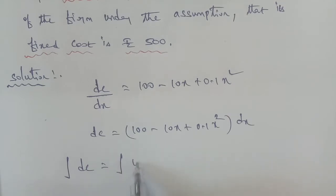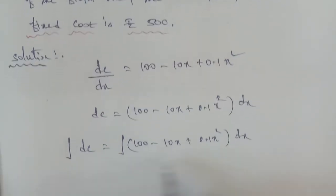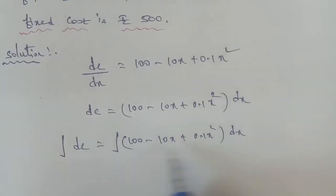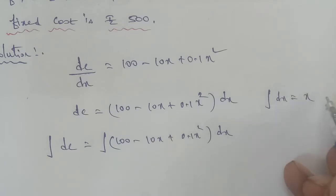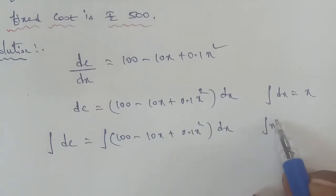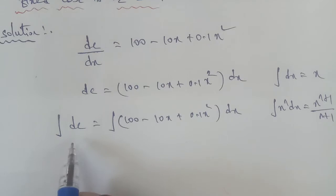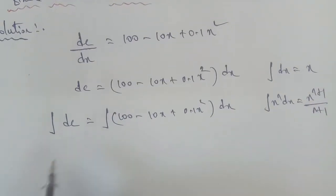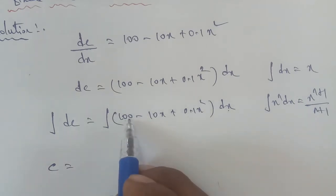Applying integration: the integral of dc equals the integral of (100 - 10x + 0.1x²) dx. Using the standard integration formula, the integral of x^n dx = x^(n+1)/(n+1). So the integration of the left side gives TC (total cost).